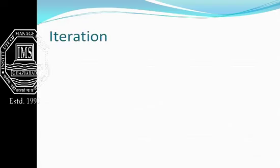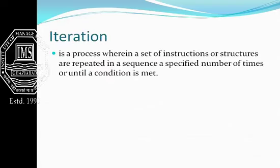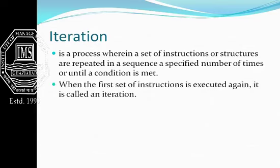Third is iteration. Iteration means repeating the particular process a number of times. This process wherein a set of instructions are going to be repeated in a sequence for a specific number of times is known as iteration or looping. When the first set of instructions is executed again, it is called iteration.